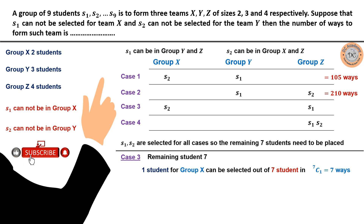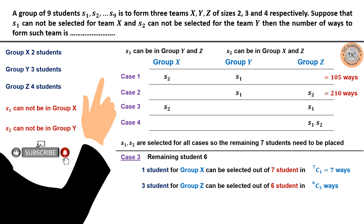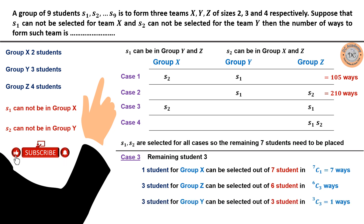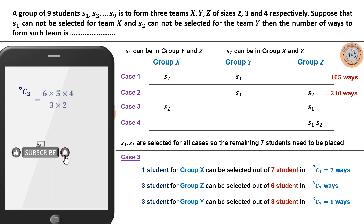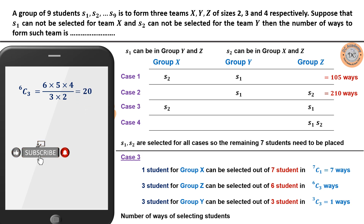After selecting for group X, six students remain. Group Z has S1 and needs four students, so three more are selected from six remaining in 6C3 ways. The remaining three students exactly fill group Y in 1 way. Now 6C3 = (6×5×4)/(3×2×1) = 20. So the total for Case 3 is 7 × 20 × 1 = 140.